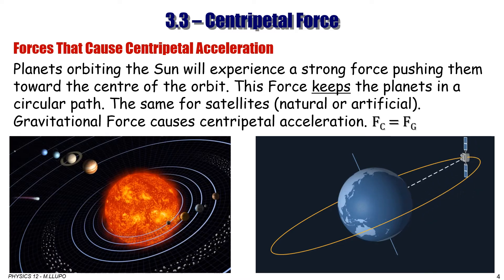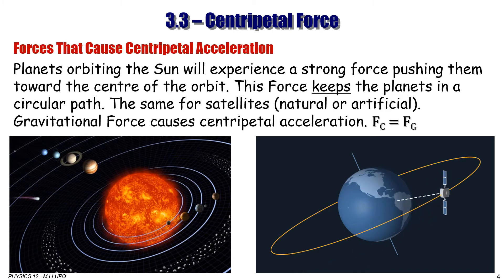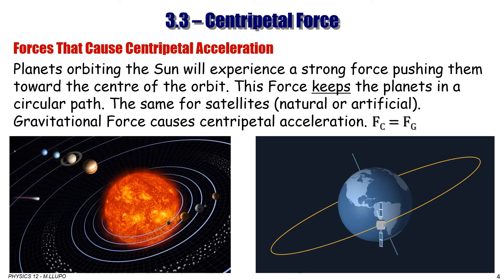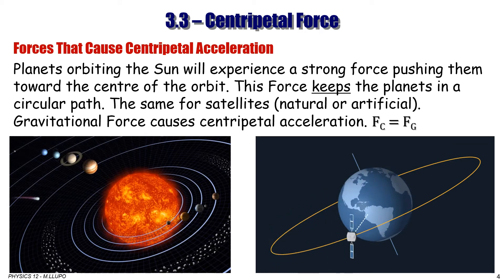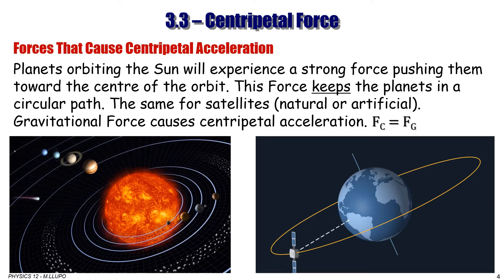From the first Newton's law, if an object is moving it has a natural tendency to move in a straight line unless a force acts upon it. Planets orbiting the sun experience a strong force pushing them toward the center of the orbit, keeping them in a circular path. The same applies to satellites — natural or artificial — orbiting the Earth. The force acting on them to maintain circular motion is the gravitational force. Gravitational force causes centripetal acceleration, which is why in this case we name it centripetal force.